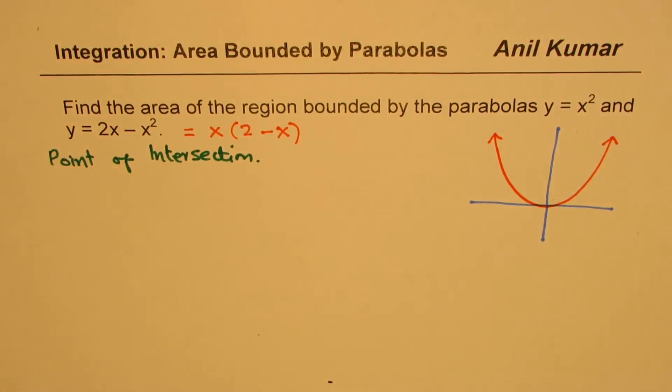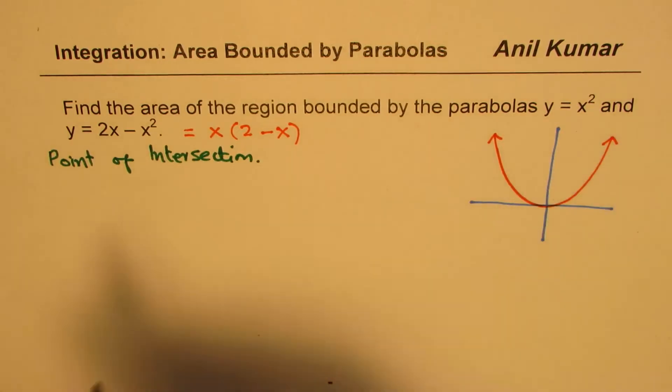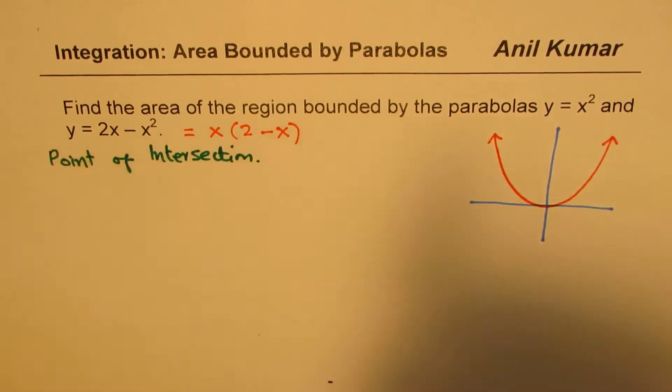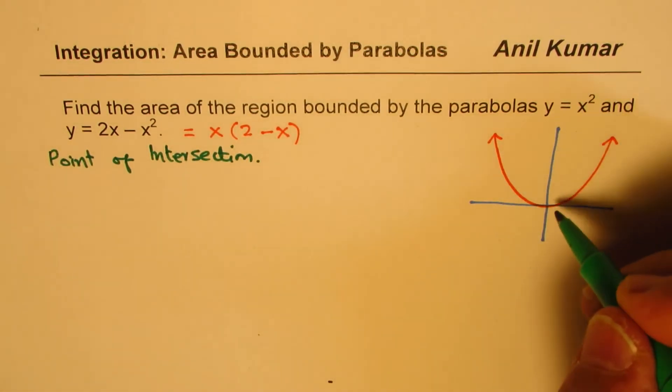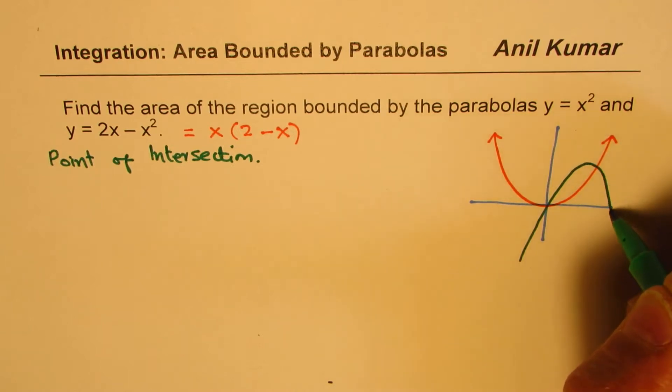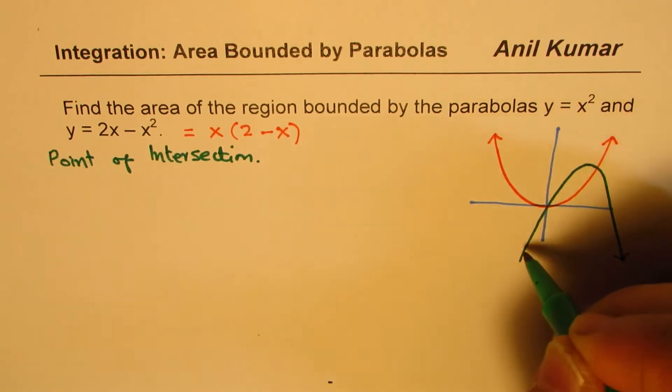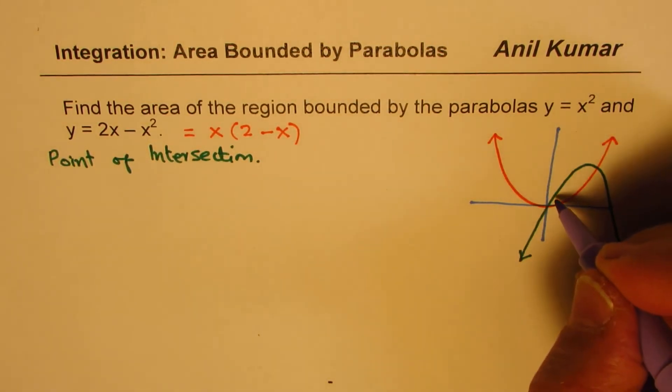the other one is at 2. So this parabola will be upside down, minus x squared, one of the zeros being at 0 and the other one at 2. So this will be kind of like this. We are interested in finding the area of region between these two parabolas, that is this region.